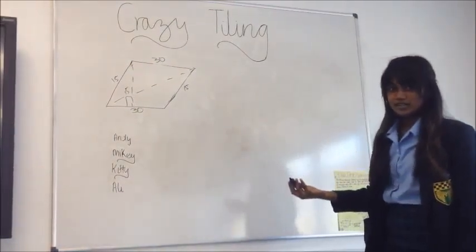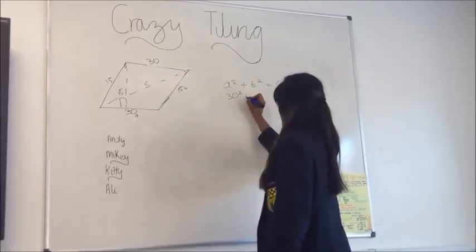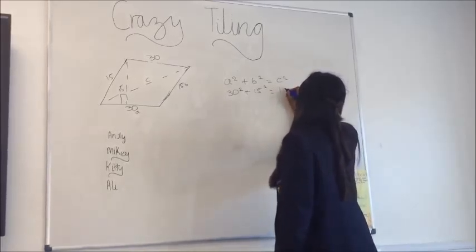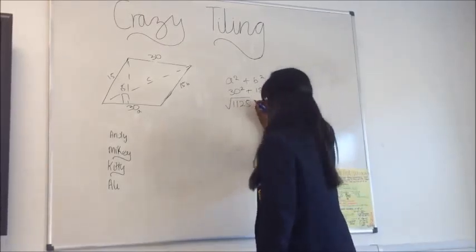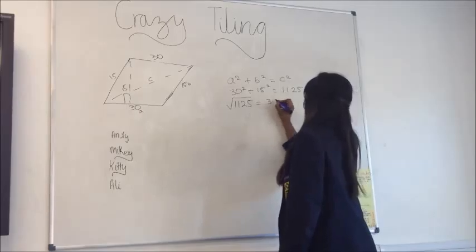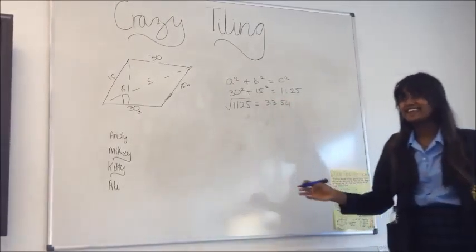I saw an opportunity for Pythagoras theorem. 30 squared, 900, plus 15 squared, 225, is 1,125. We needed to square root this to find out what C would be. We got 33.54. And yes, that is how you do it.